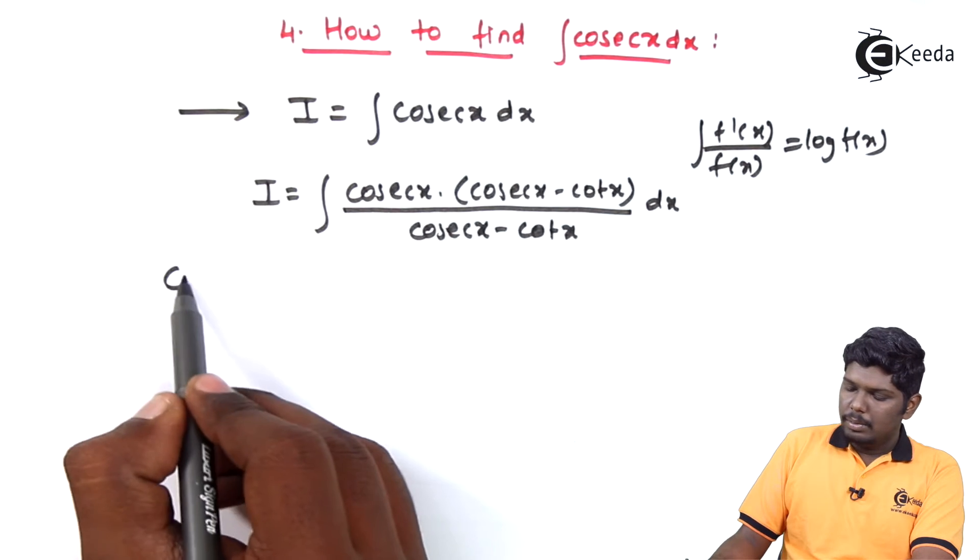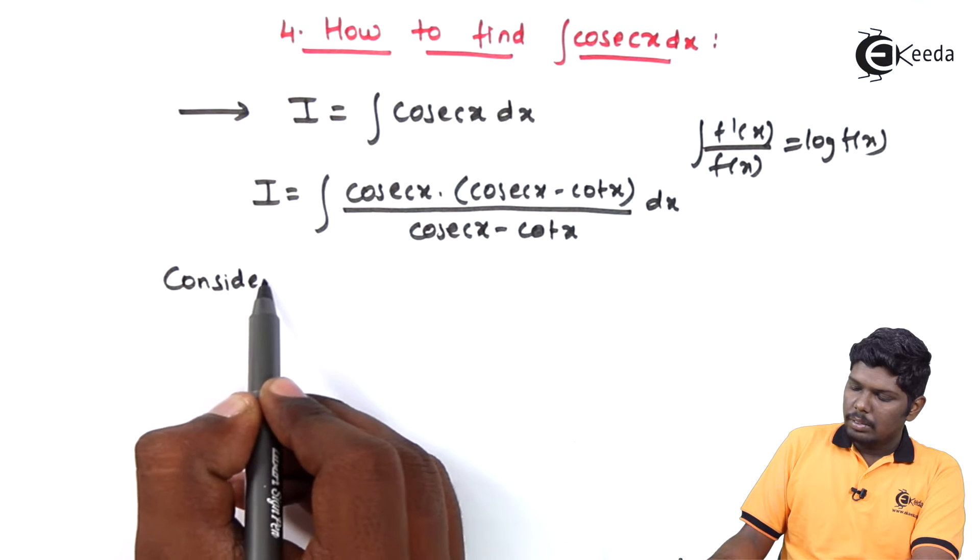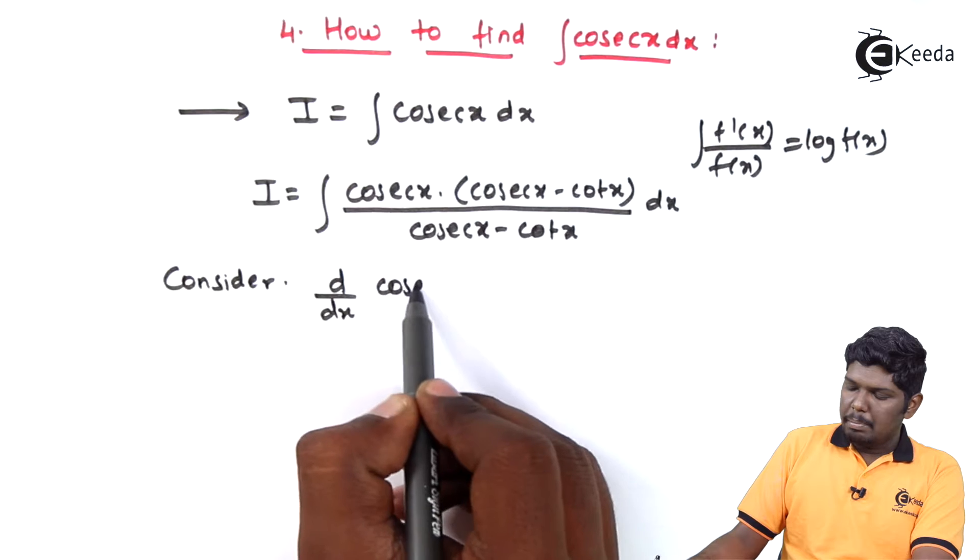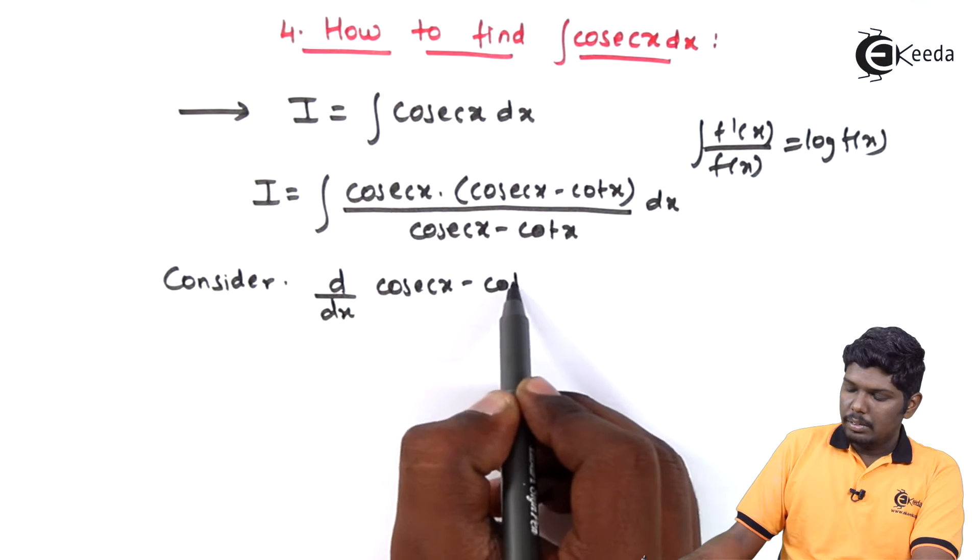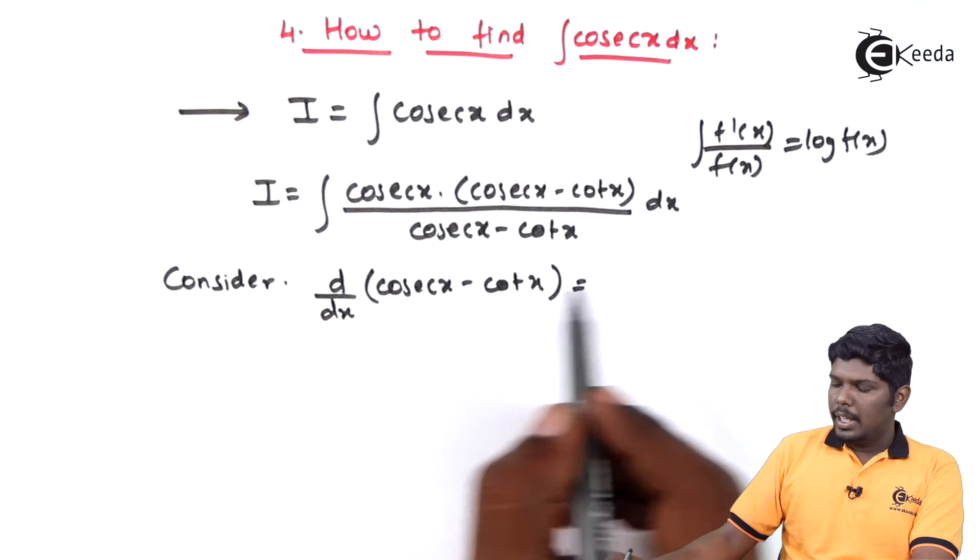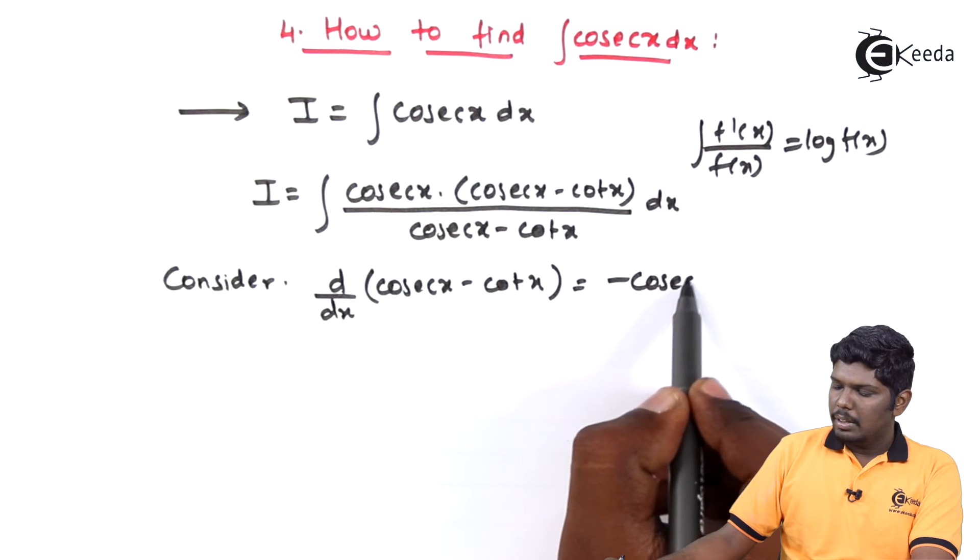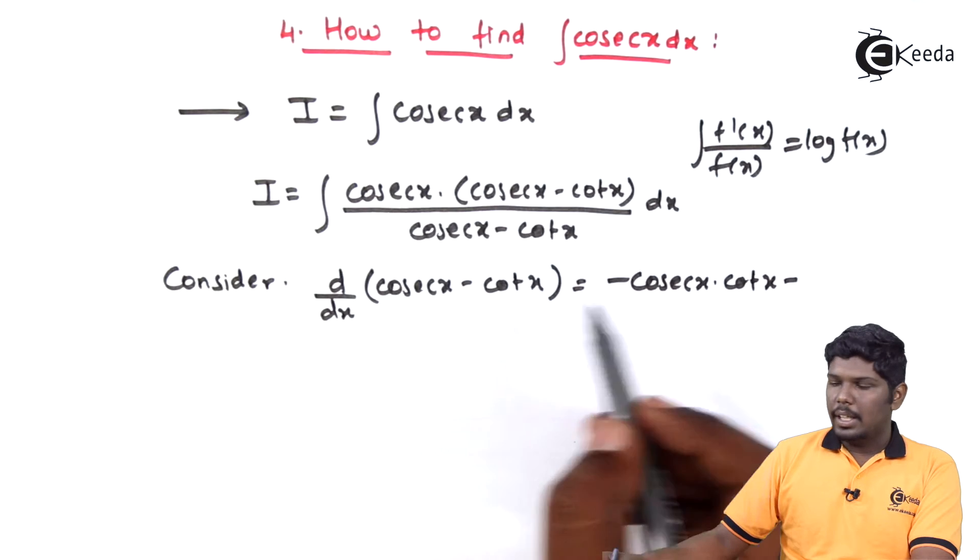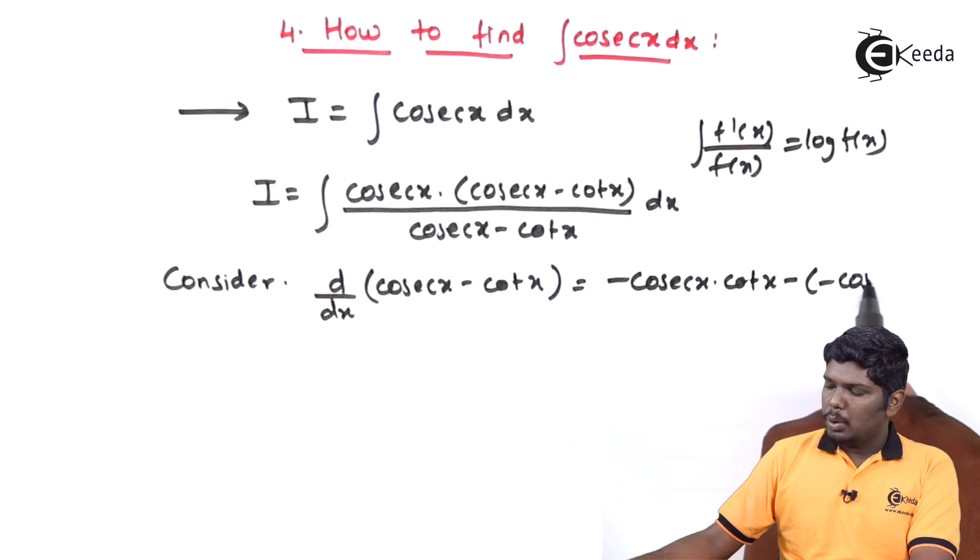Now let us consider d by dx of cosec x minus cot x. We know that derivative of cosec x is minus cosec x cot x, minus derivative of cot x is minus cosec square x.